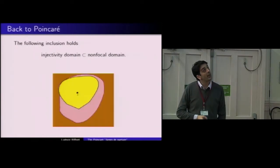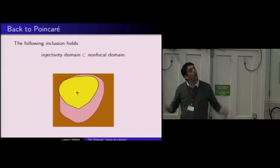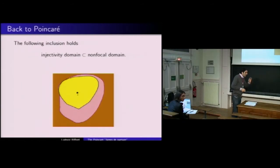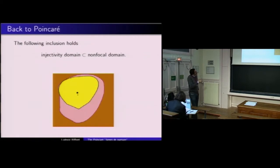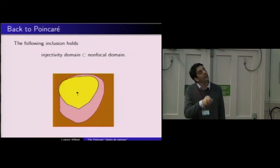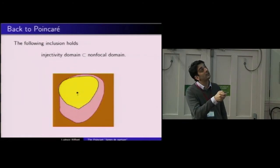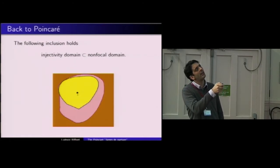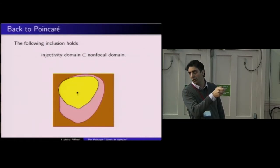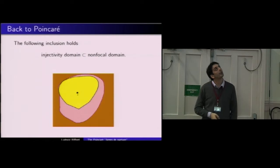Poincaré nous a dit : étant donné une surface analytique, je fixe un point O, je regarde l'ensemble des lignes de partage, et les extrémités des lignes de partage sont nécessairement des points conjugués. Cela implique une inclusion naturelle de l'ensemble jaune dans l'ensemble rose — propriété bien connue du calcul des variations. Plus précisément, les bords de ces deux ensembles doivent se toucher en au moins deux points : il y a au moins deux vitesses qui sont à la fois conjuguées et dans le cut locus, c'est-à-dire extrémités de feuilles de l'arbre de Poincaré.